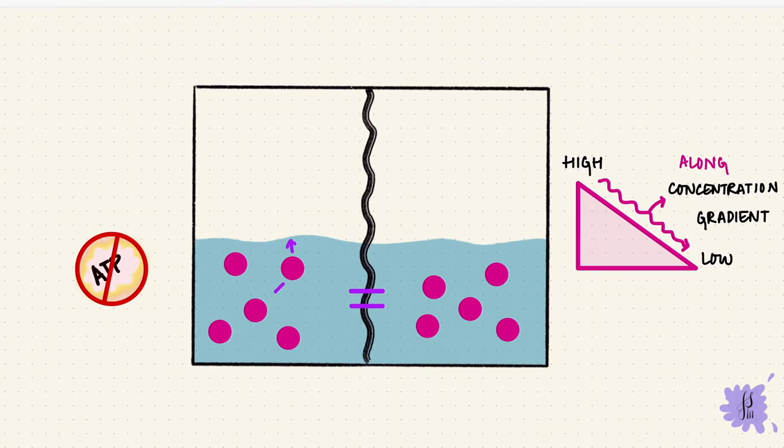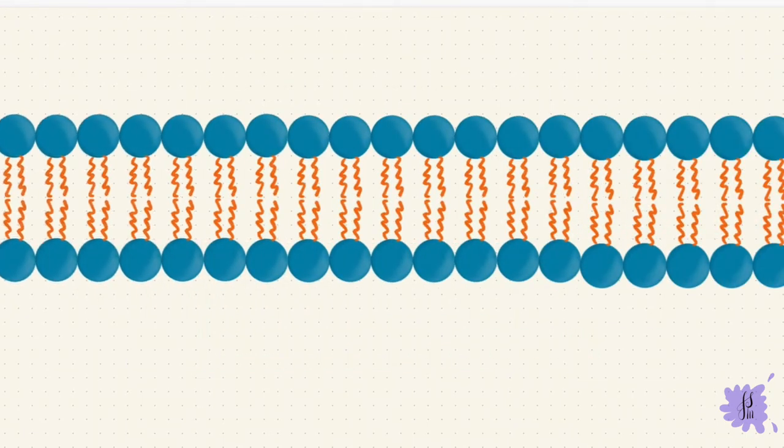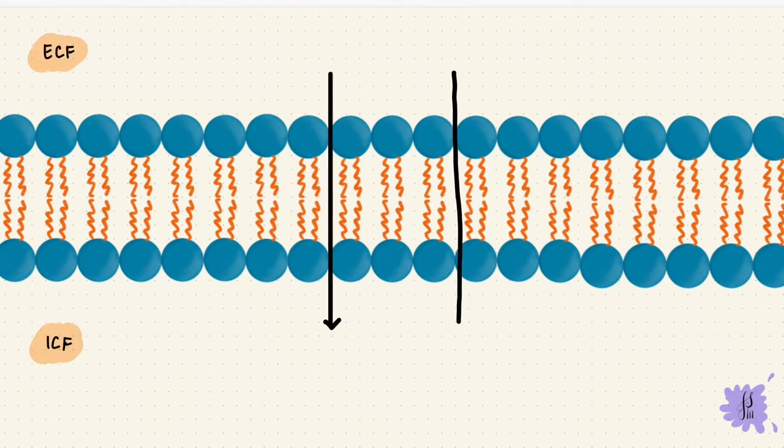This is equilibrium. Even at equilibrium, the molecules still keep moving around, but the concentrations of the two solutions stay equal. And there's no net diffusion that happens at equilibrium. Now the same thing happens across the cell membrane. Substances diffuse into and out of the cell depending upon the concentration gradient, from high to low.